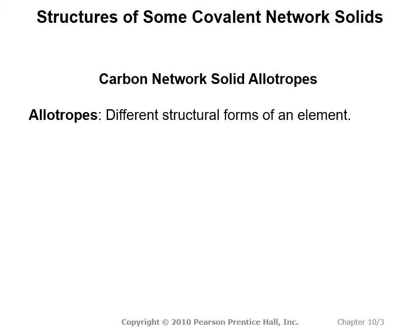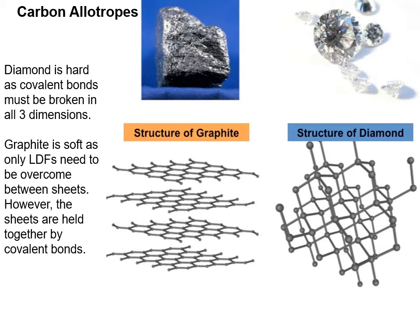Let's take a look at some structures of covalent network solids, starting with carbon network solids. There are several different types and we call those allotropes. Allotropes are different structural forms of an element. Let's take a look at our carbon allotropes.